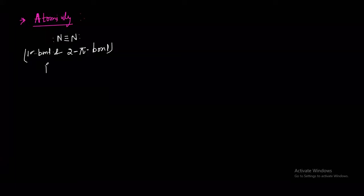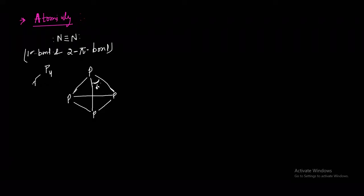The P4 structure has a tetrahedral arrangement where atoms are placed at the corners of a tetrahedron. The bond angle is 60 degrees. The total valence electrons in P4: phosphorus has 5 valence electrons, so 5 × 4 = 20 valence electrons.